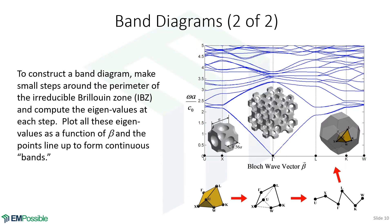When you first look at a band diagram the symbols along the horizontal axis can be confusing. To understand them you need to learn what a Brillouin zone is — for a face-centered cubic photonic crystal there's a corresponding Brillouin zone — and what an irreducible Brillouin zone is: the smallest piece of the Brillouin zone that characterizes the entire zone by exploiting the lattice's extra symmetry. The vertices of the irreducible Brillouin zone are called the key points of symmetry.